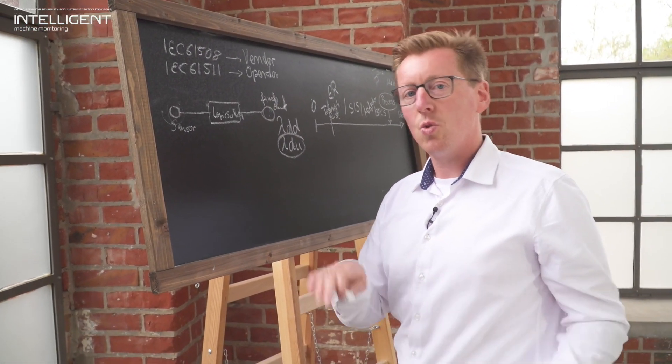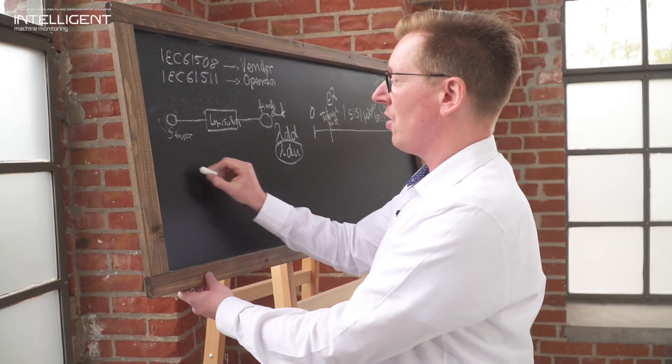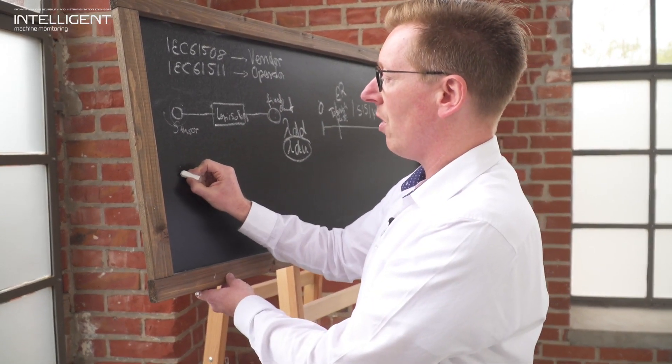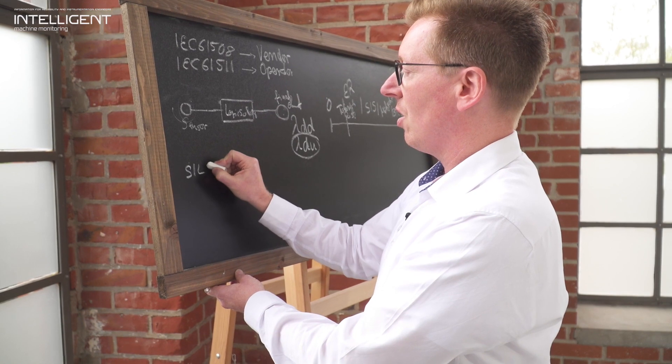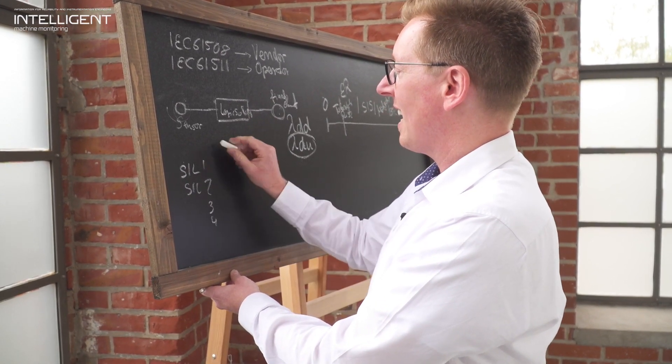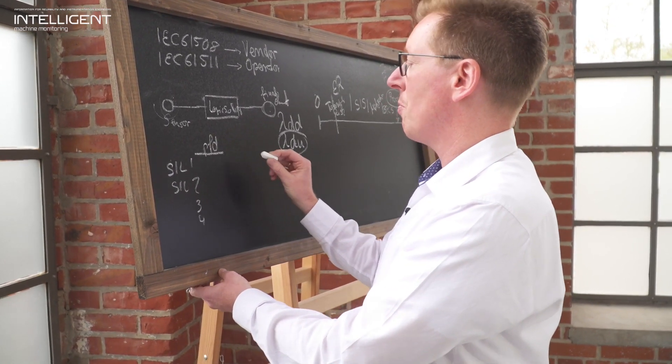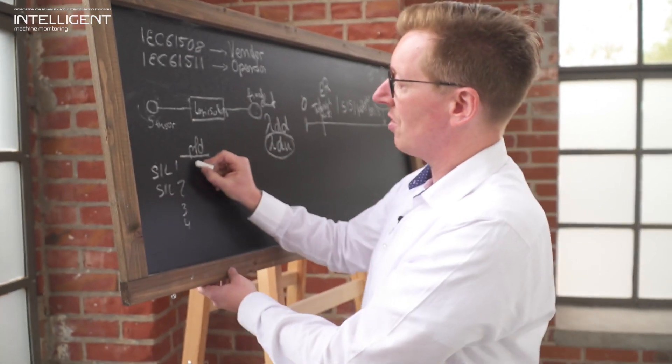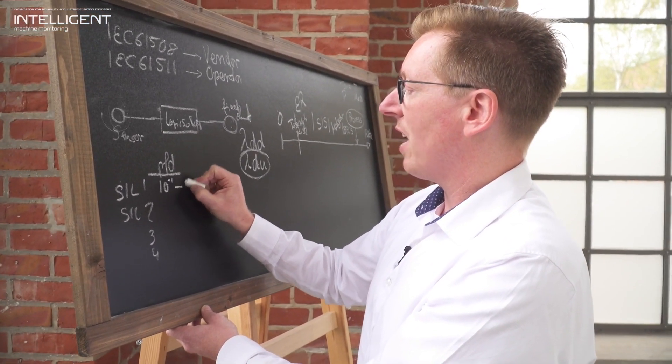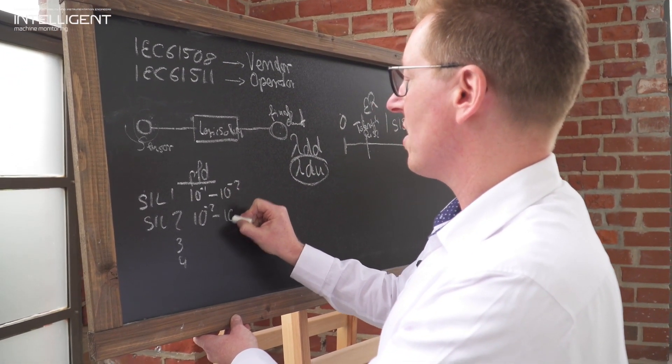And actually that leads us into the discussion of the different SIL levels, what actually is a PFD value. There is a safety integrity level from 1 to 4. We have a SIL 1 system, SIL 2, 3 and 4, and the driving characteristic factor is a PFD value, probability of failure on demand. For the SIL 1 system, the values may range between 10 to the power of minus 1 to 2.